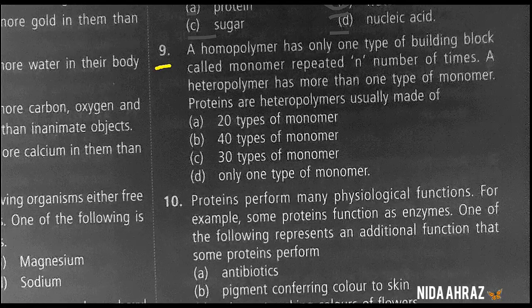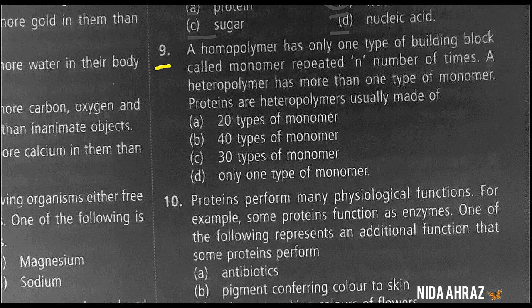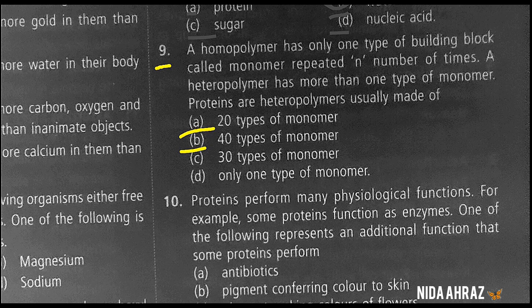A homopolymer has only one type of building block called monomer, repeated n number of times. A heteropolymer has more than one type of monomer. Proteins are heteropolymers usually made up of how many types of monomers: 20, 40, 30, or only one? The correct choice is option A — 20 types of monomers.